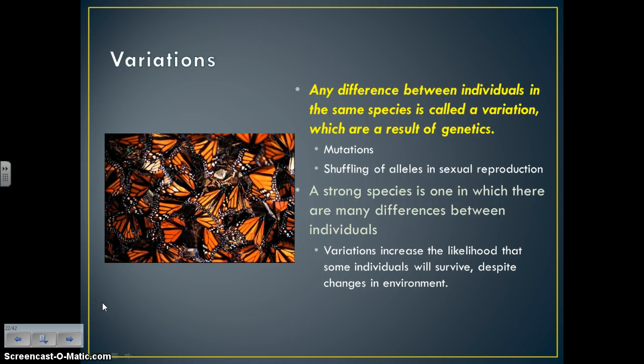Sexual reproduction creates genetic variation. A strong species is one with many differences between individuals. If you've got variety, there's an increased chance that some individuals will survive despite environmental changes. If a crop has genetic variation, it can survive a variety of pests or natural disasters. If they're all genetically identical, they'll all be wiped out by the same thing.